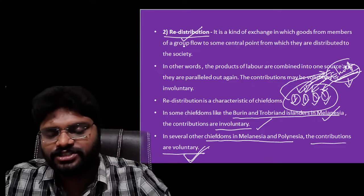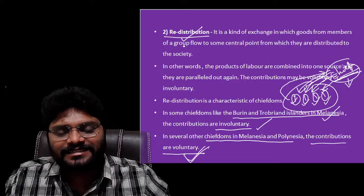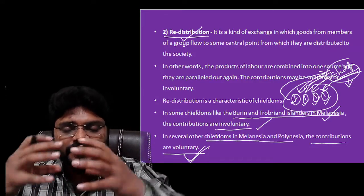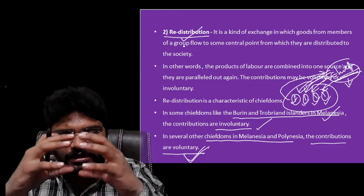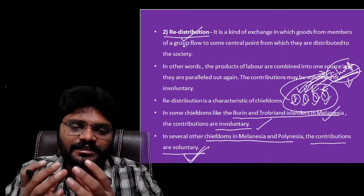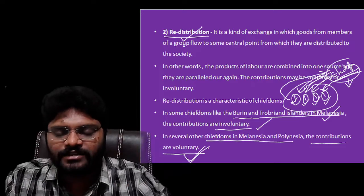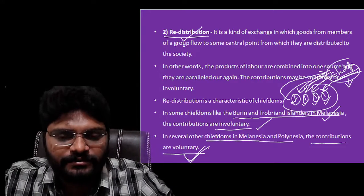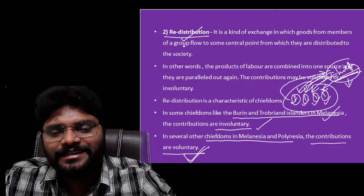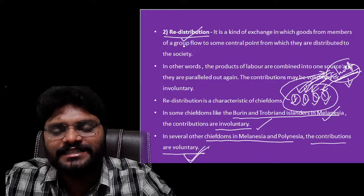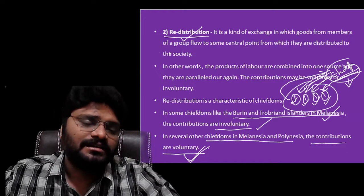In summary, redistribution means the centralized authority collects goods from all members, retains some portion, and the remaining goods flow back into society in the form of public works, support for needy persons, orphans, and the general welfare of the society. That is called redistribution.